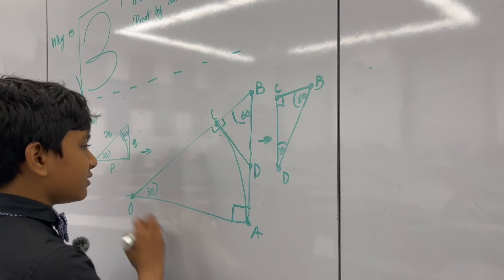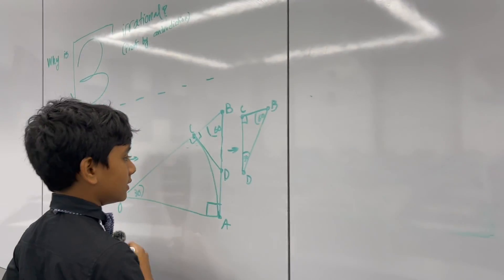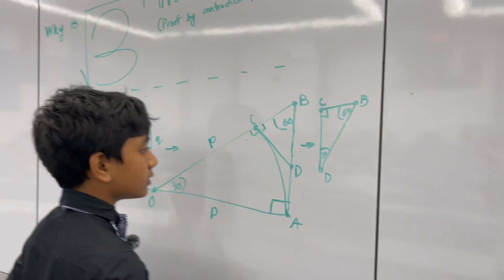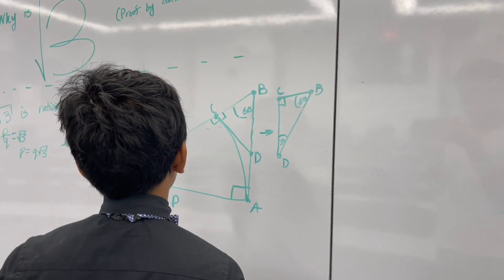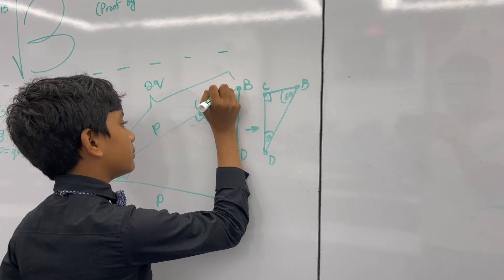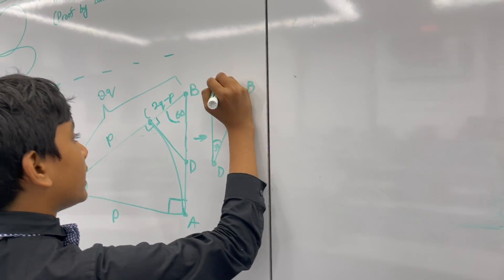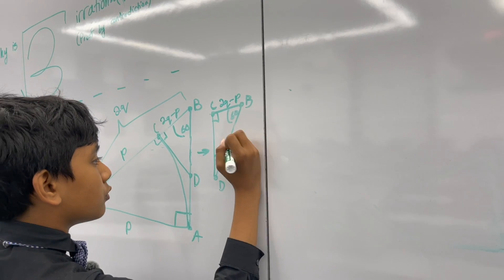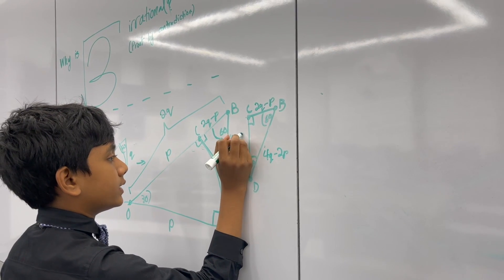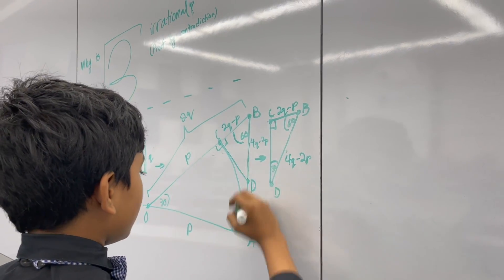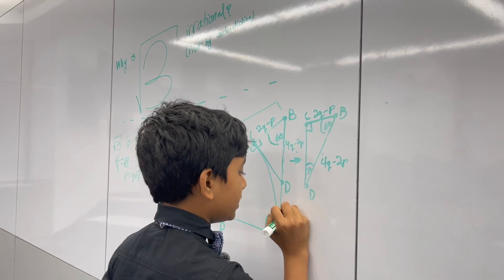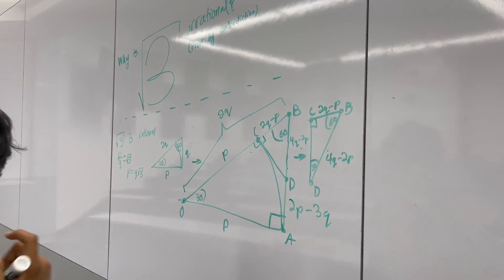What about the quadrilateral O, A, D, C? We know OA and OC are both radii, so both equal p. We know the entire hypotenuse is 2q, so the length OB is 2q, meaning BD must be 2q minus p. If 2q minus p is the short side, then the long side BD has to be twice that: 4q minus 2p. Then AD must be q minus (4q minus 2p), which gives us 2p minus 3q.